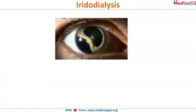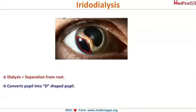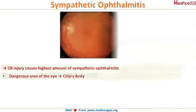Iridodialysis is also very frequently asked. Dialysis means separation from the root — any structure separated from the root is termed dialysis. Iridodialysis means the iris is separated from its root. The pupil appears in the form of a D, so a D-shaped pupil is seen in iridodialysis.